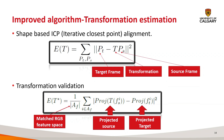Now we have frames aligned frame by frame, but error accumulates over time across the sequence. To make a globally consistent map, we perform least squares optimization using a pose graph method.